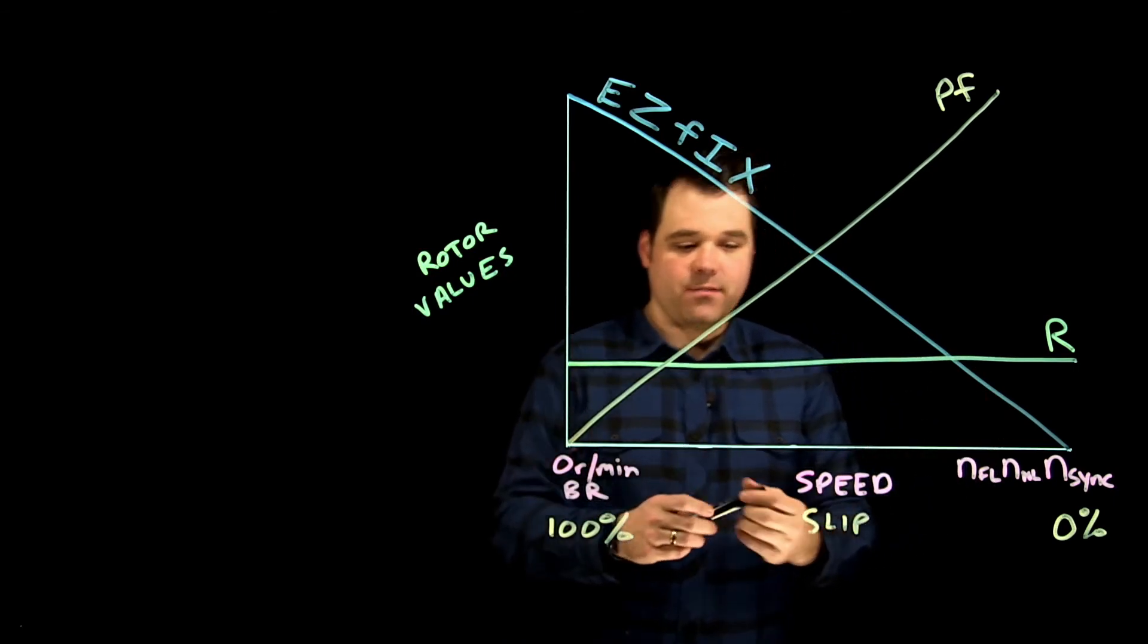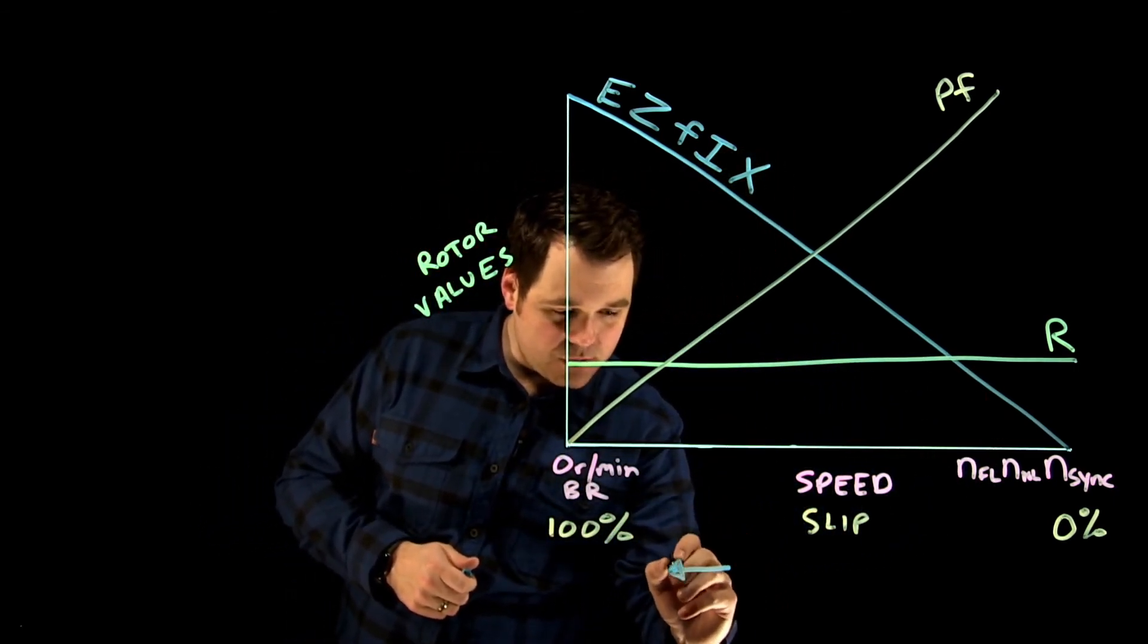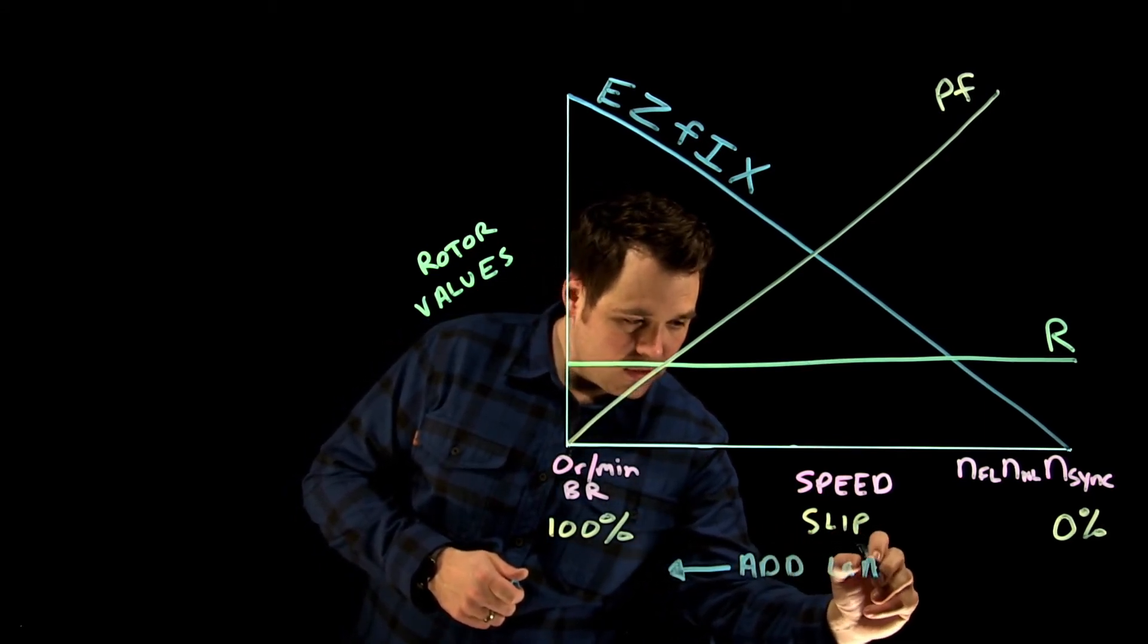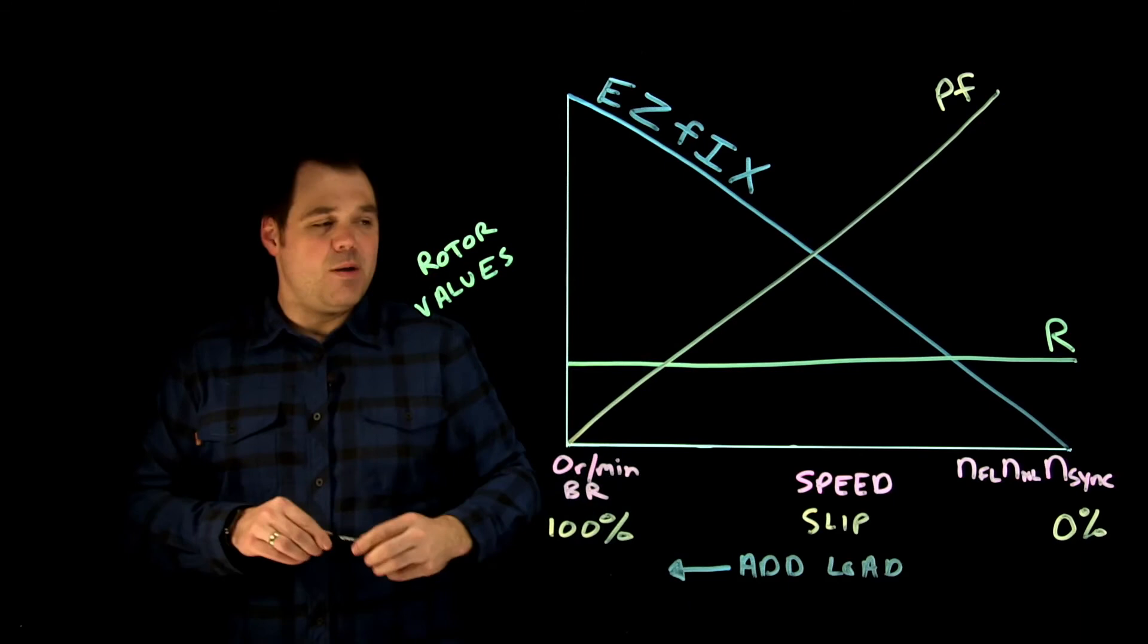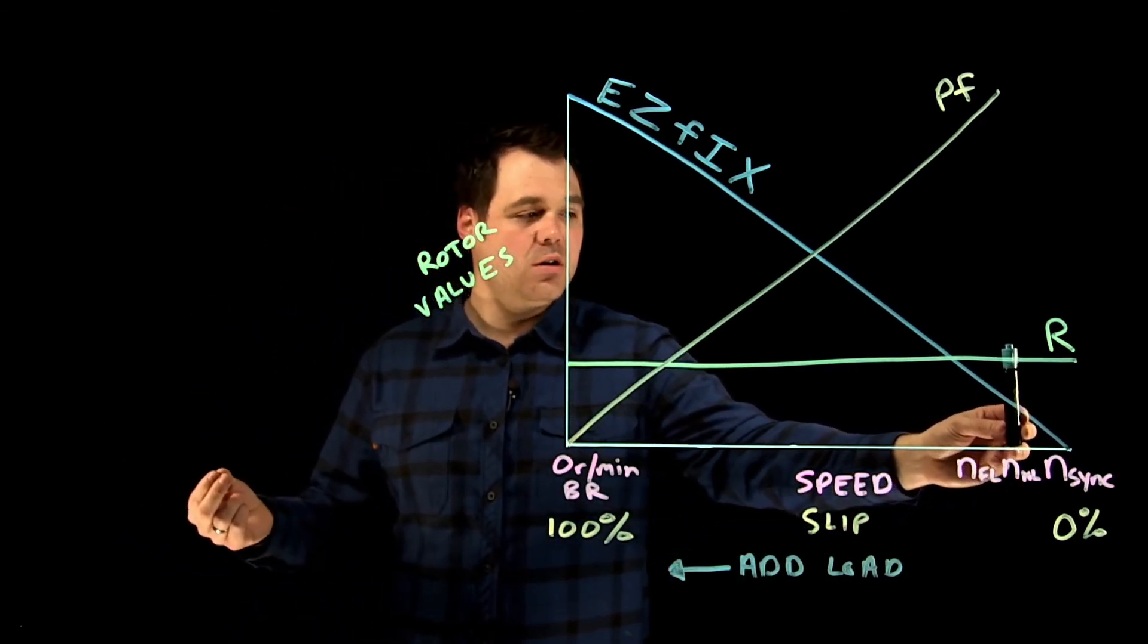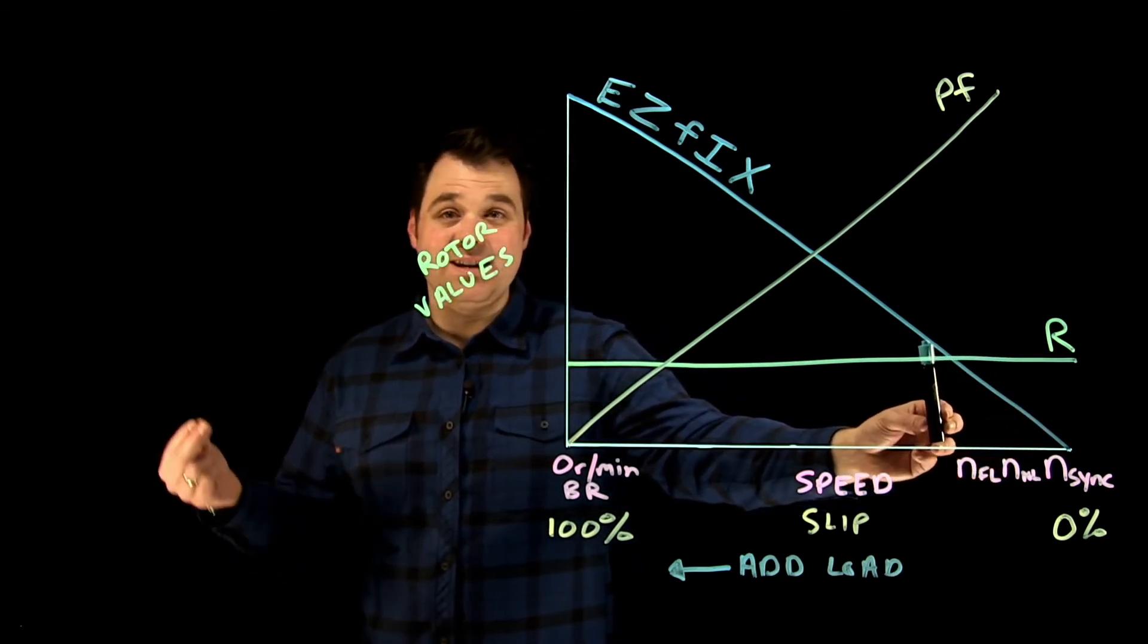Think about that. If I add load, I'm going to shift this way on the chart. Add load. So maybe I'm running at a no load speed over here, I start to add a little bit of load, my speed is going to slow down, my slip is going to increase.